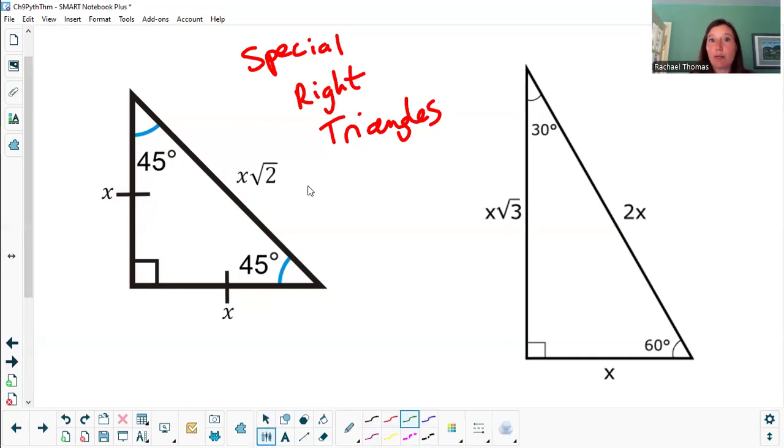There are some things that help me to remember them. This has a square root of 2 in it and two of the sides are equal. In the 30-60-90 right triangle, all three sides are different and it's got a 3.